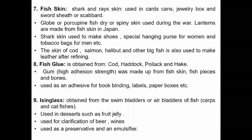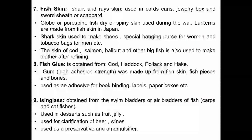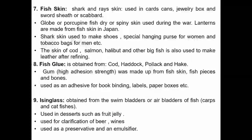The ninth product is isinglass, obtained from the swim bladders or air bladders of fish, especially calves and carp-type fishes. It is used in desserts such as fruit jelly, used for clarification of beer and wines, and used as a preservative and emulsifier.